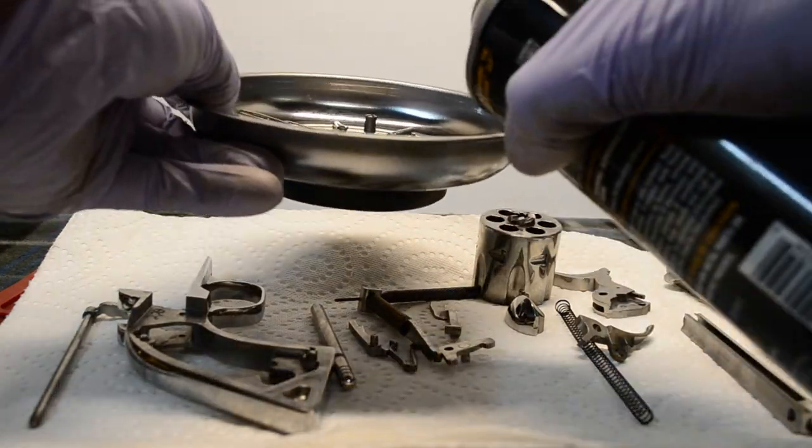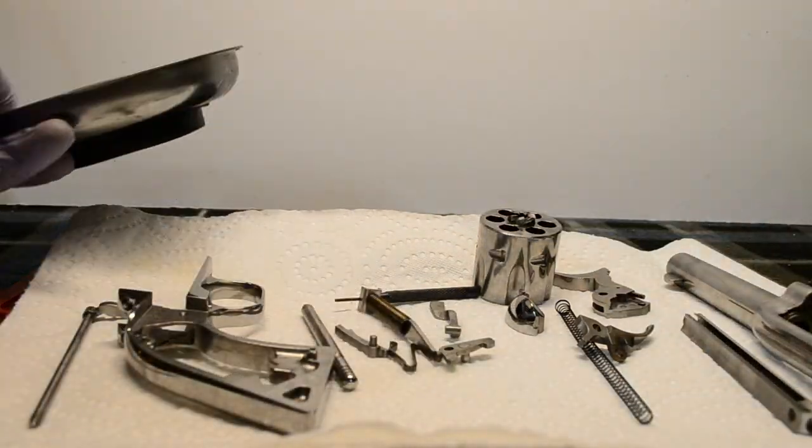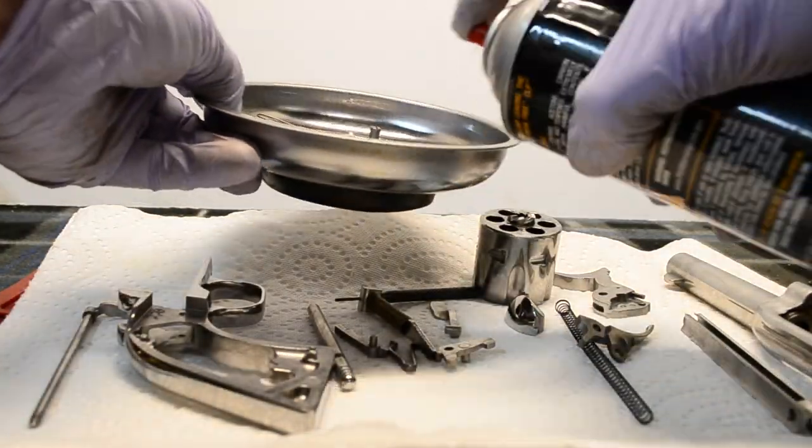Saturate your jar of small parts with break free and swirl the excess fluid around so that each piece is covered.